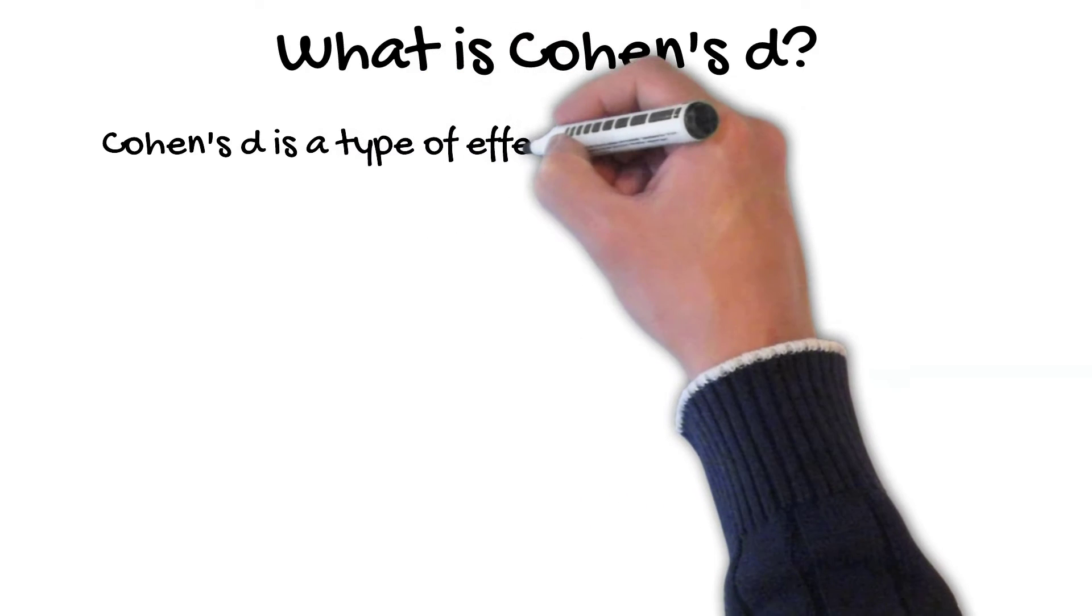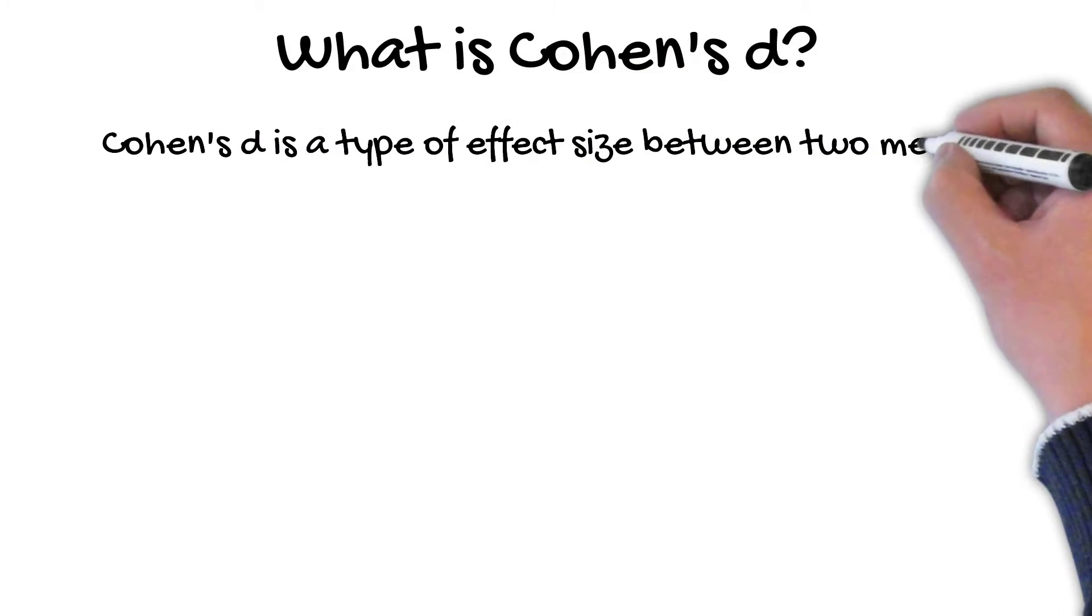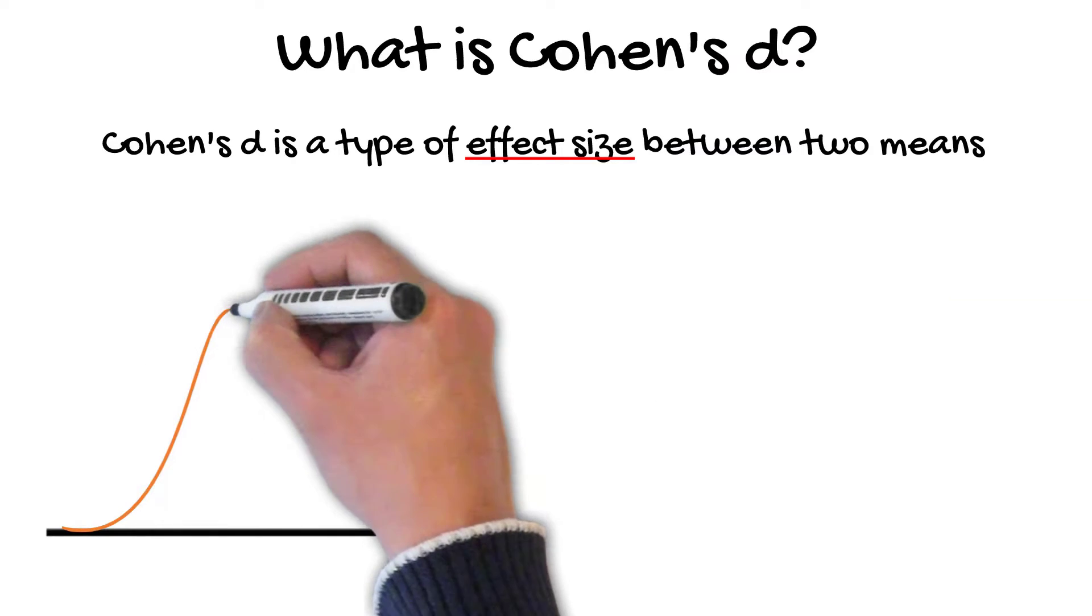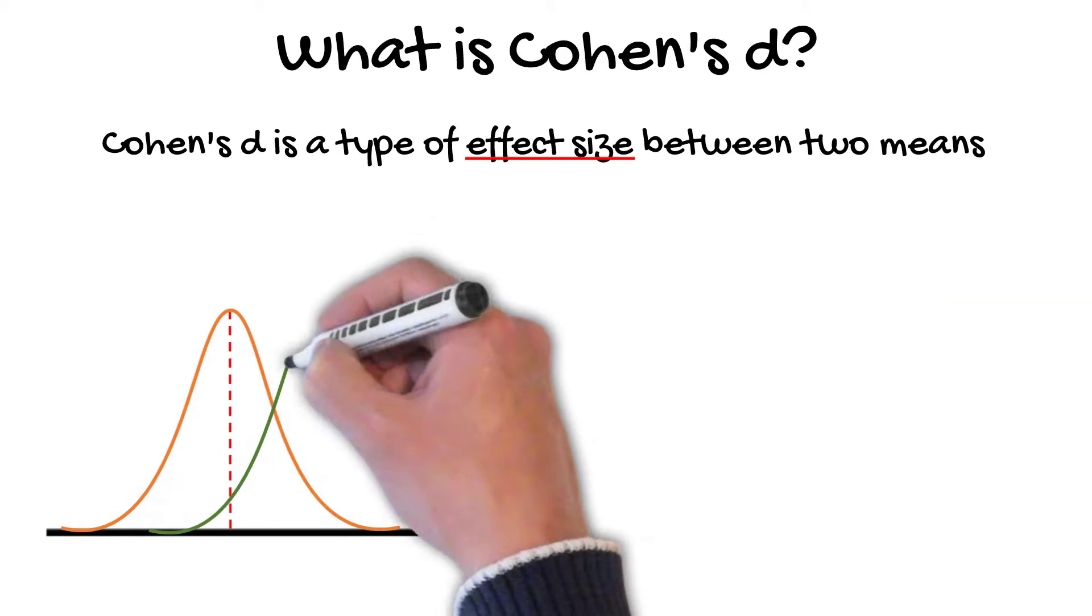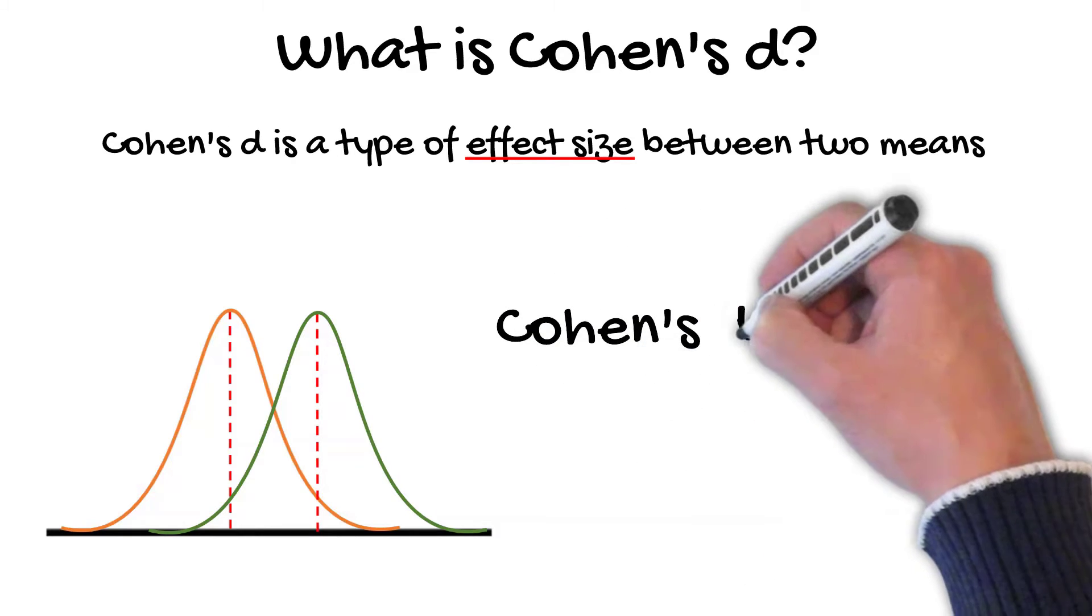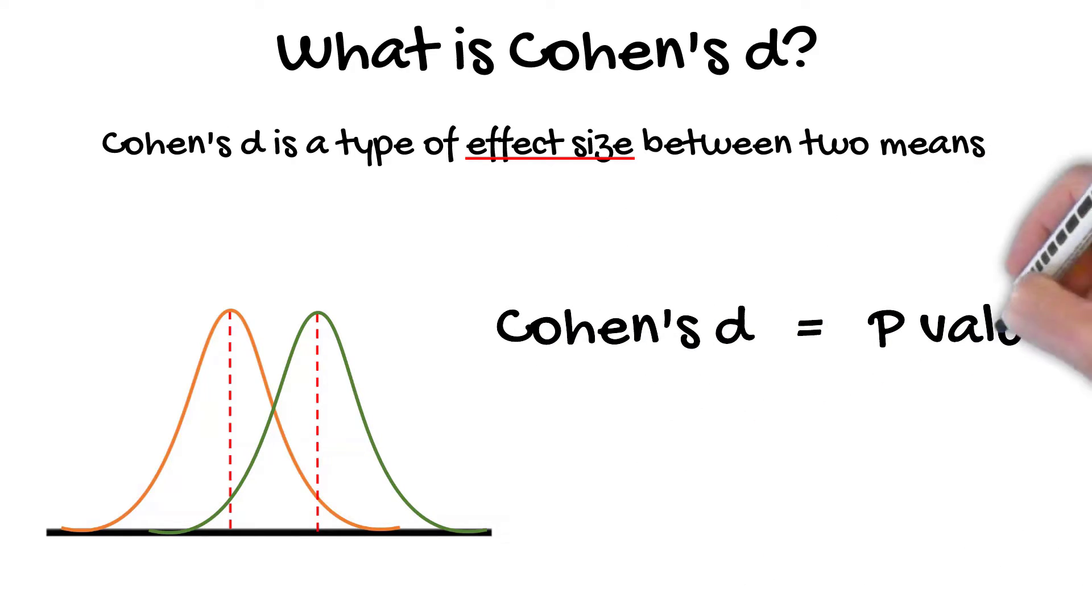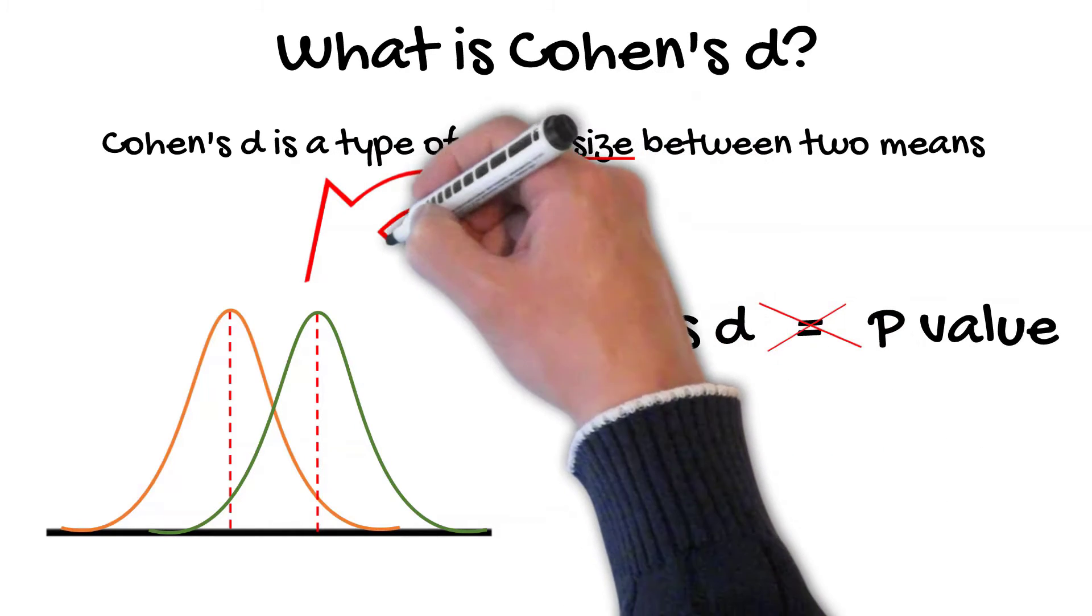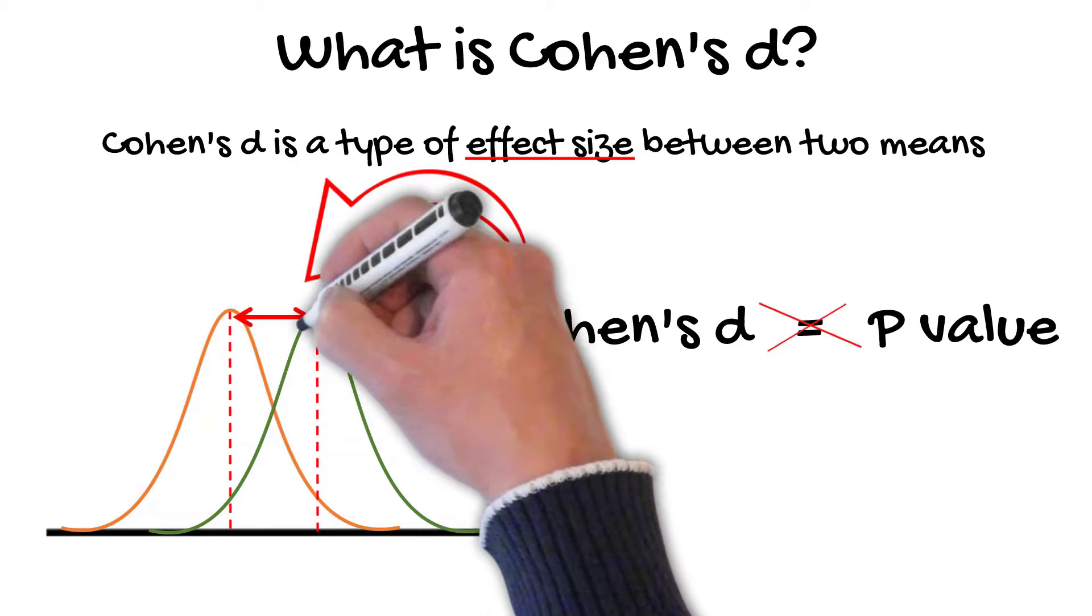Cohen's D is a type of effect size between two means. An effect size is a quantitative measure of the magnitude for the difference between two means. This is different from the p-value. While a p-value can inform you if an effect exists, the p-value will not reveal the size of the effect. This is what an effect size does.